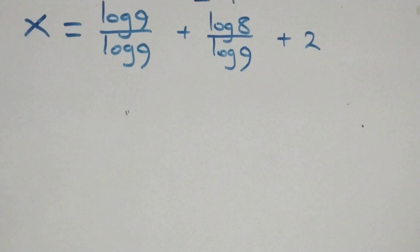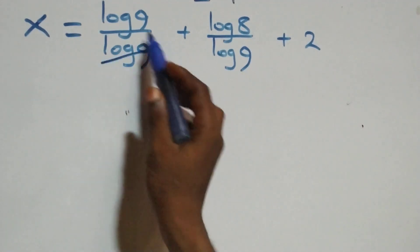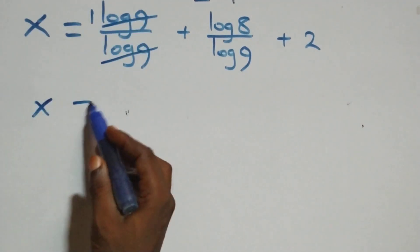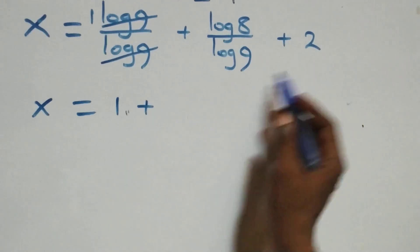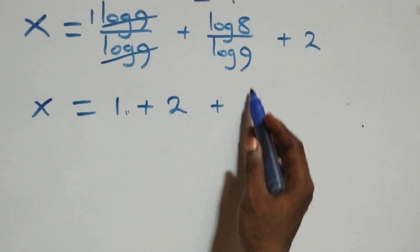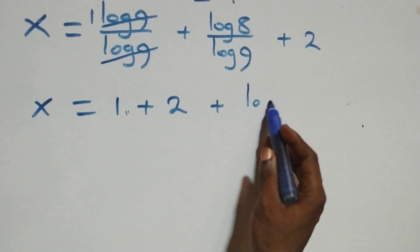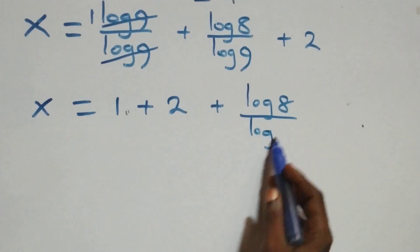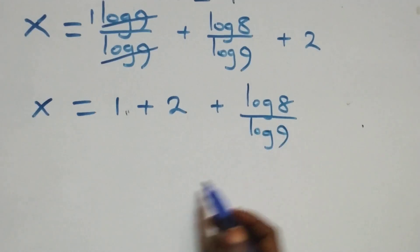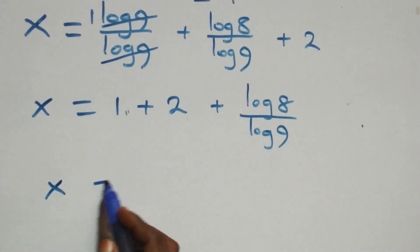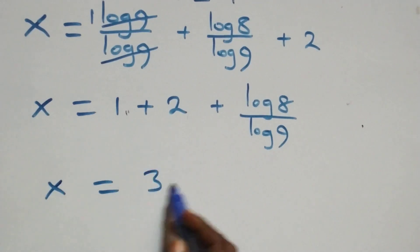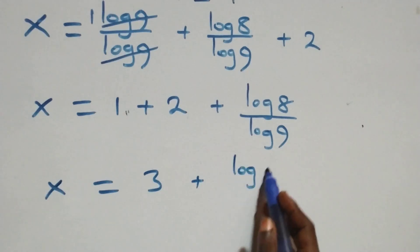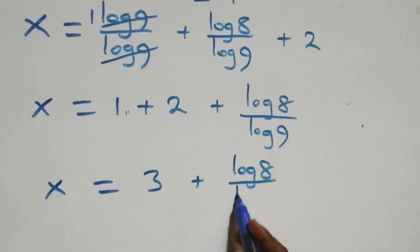Log nine over log nine cancels to one, so x equals one plus log eight over log nine plus two. Writing two first: x equals three plus log eight over log nine.